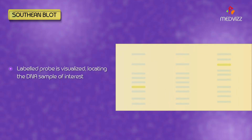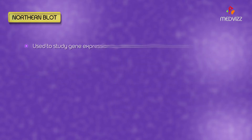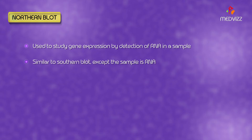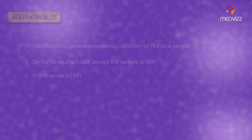Northern blot is used to study gene expression by detection of RNA in a sample. It is the same as the southern blot except the sample is RNA and not DNA. The probe remains DNA.